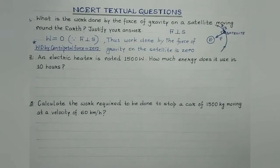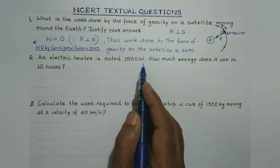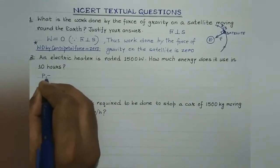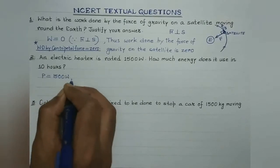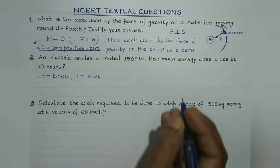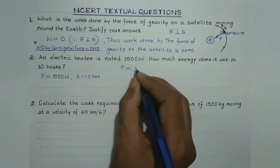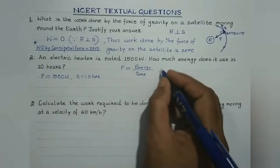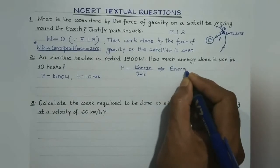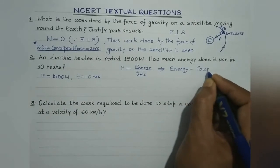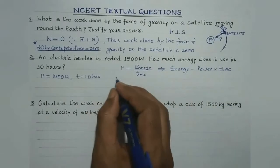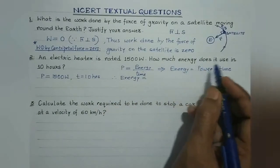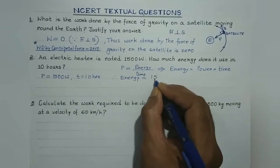Let's proceed with the second question. An electric heater is rated 1500 watt — this is the power of the heater given. How much energy does it use in 10 hours? Power of the heater is given to be 1500 watt and time is given to be 10 hours. Electric power is given by the rate of consumption of electrical energy, that is energy divided by time, which implies that energy equals power multiplied by time. How much energy does it use in 10 hours? Power is 1500 watt.